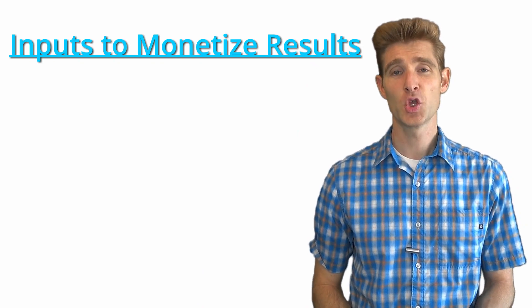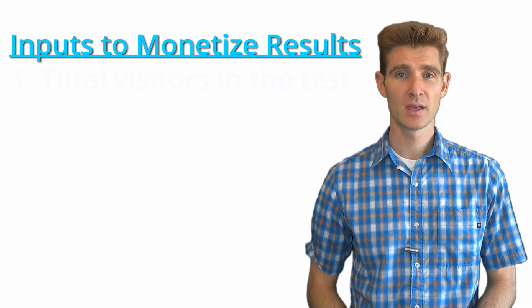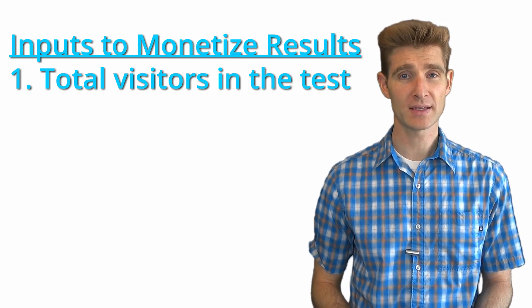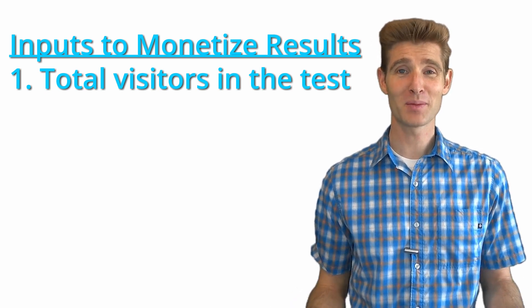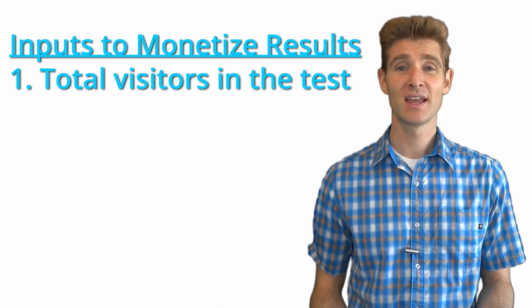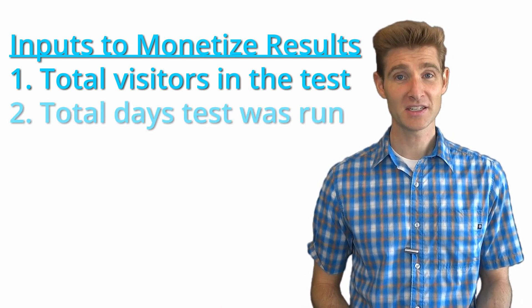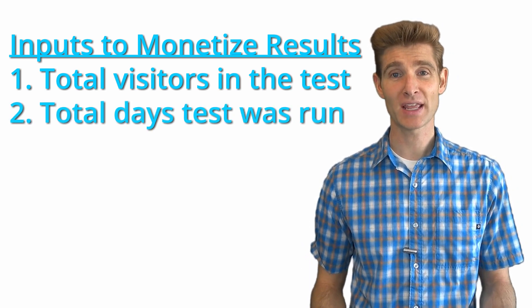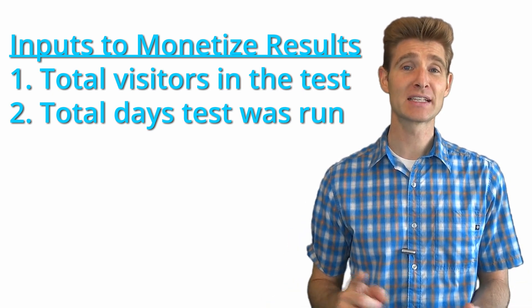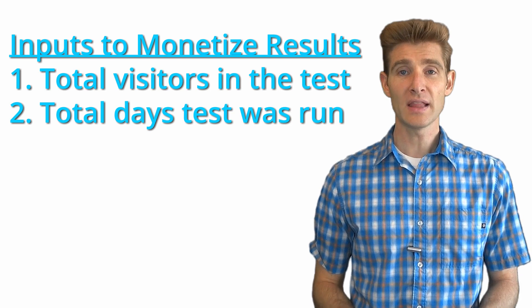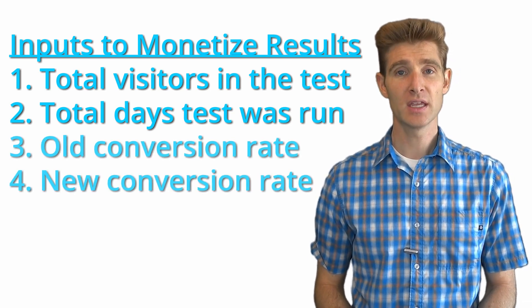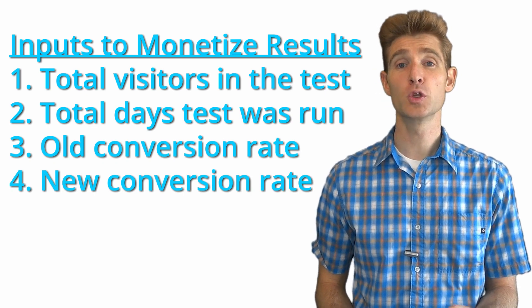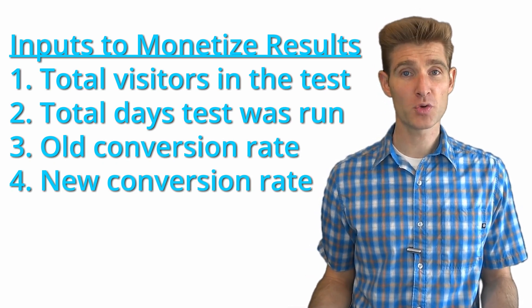Now let me show you how to do it. To calculate the monetized value of a test, you need four inputs. First, the total visitors in the test — just add up the visitors across all variations. Second, the total days the test was run, which is simply the start date to end date. The last two inputs are the old conversion rate — the conversion rate of the losing experience — and the new conversion rate, or the conversion rate of the winning experience.